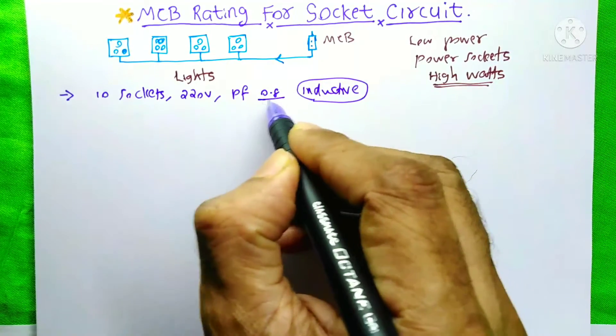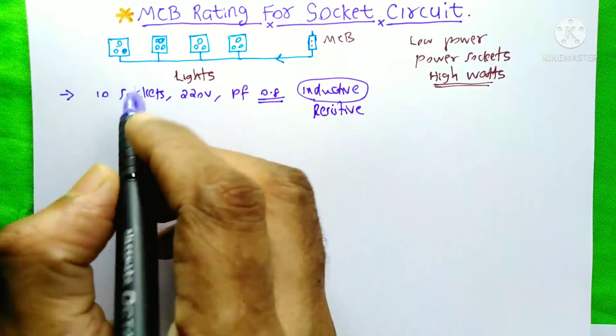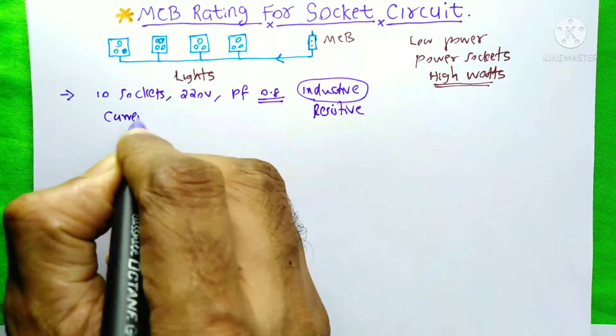So we need to consider power factor. You know MCB is rated in amps. That means we need current.